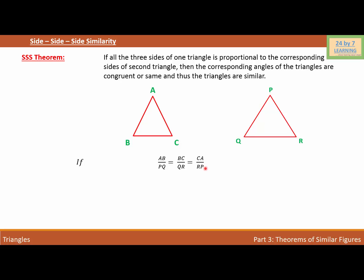So what we're saying is that if AB over PQ equals BC over QR equals CA over RP, then angle A is congruent to angle P, angle B is congruent to angle Q, and angle C is congruent to angle R.